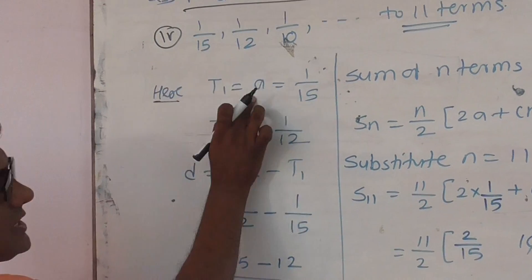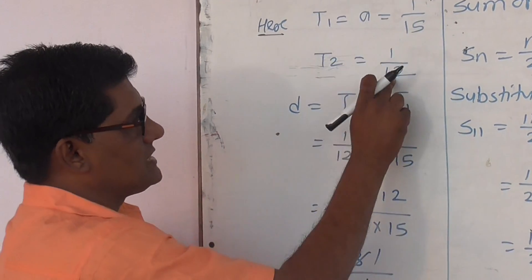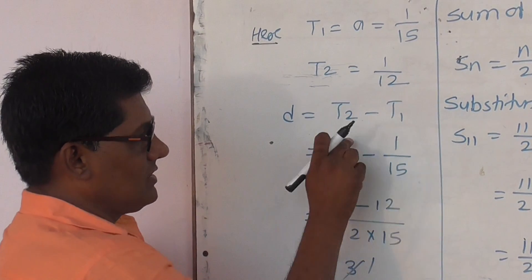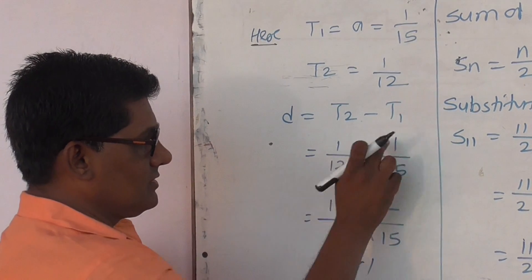Here T1 is nothing but A, which equals 1 by 15. T2 is the second term, 1 by 12.